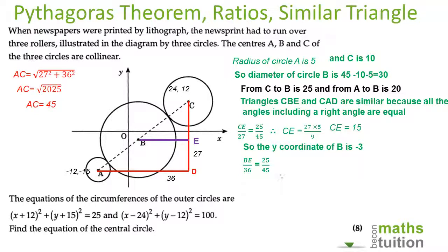Similarly we can get BE. Now BE is hopefully going to give us 20. From there to there is 36, which means that from the center of circle A to the center of circle B parallel to the x-axis is 16, so from there to there is 16.